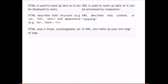HTML is used to markup text so it can be displayed by the user — it is for presentation and display purposes. XML, on the other hand, is used to markup data so it can be processed by computers. XML describes structure and appearance such as bold and italic, while XML describes only the content or meaning, with no appearance-based structure.